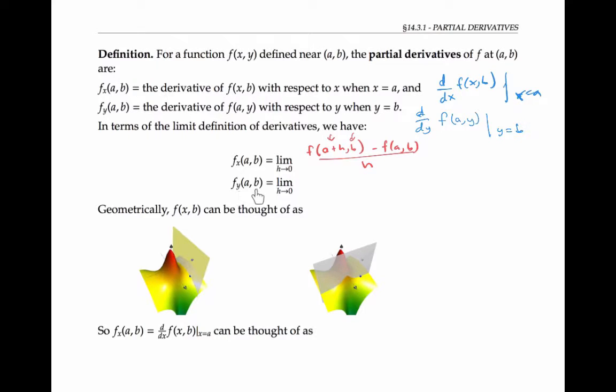If we want to do f sub y of AB, that's the limit as h goes to zero of f of a, b plus h minus f of AB over h, because now we're holding x constant at a and letting y vary.